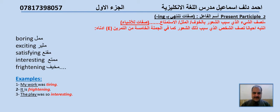Present participle — اسم الفاعل. Adjectives ending with -ing. Present participle is used to describe the thing that causes the feeling of frightening, boring, or interesting, etc. اسم الفاعل يصف الشيء الذي سبب الشعور بالخوف أو الملل أو الاستمتاع. هي صفات للأشياء.